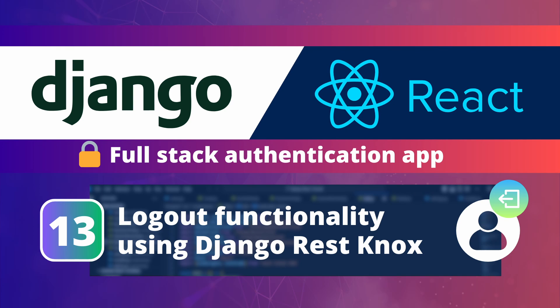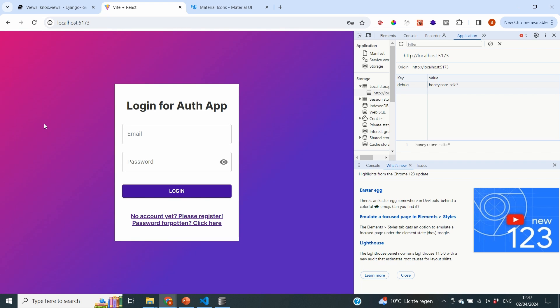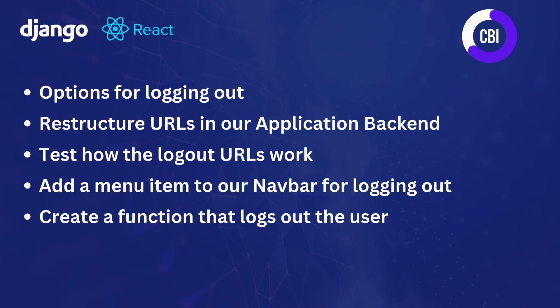Hi everyone and welcome to a new video on the CBI channel. In this tutorial series, we're creating a login and authentication application using Python Django in the backend and React.js in the frontend. This is not the first video in this series — we've already done 12 before, focusing on setup, registering users, securing our APIs, and many other things. In this video, we're going to focus on logout functionality so that users can use a button to log out and make sure all tokens are deleted.